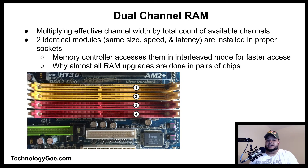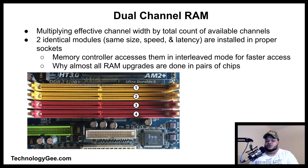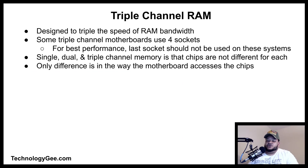When adopting a multi-channel configuration, this means multiplying the effective channel width by the total count of available channels. When two identical modules — with the same size, speed, and latency — are installed in the proper sockets, the memory controller accesses them in interleaved mode for faster access. This is why almost all RAM upgrades are done in pairs of chips. Most systems with two pairs of sockets in contrasting colors implement dual channel operation, so you need to install matching modules in the same color sockets.